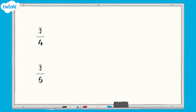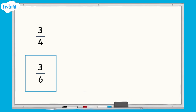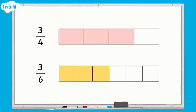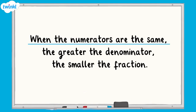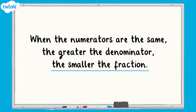Let's look at a different example. Here we have two fractions with the same numerator: three quarters and three sixths. If we represent them using bar models of the same size, we can see that three quarters is greater than three sixths. This leads us to the conclusion that when the numerators are the same, the greater the denominator, the smaller the fraction.